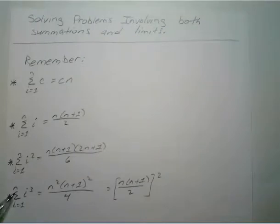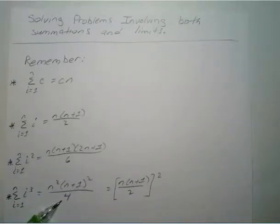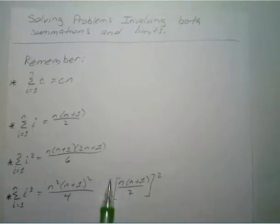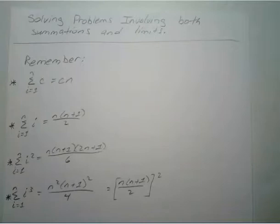And if you have the sum from i equals 1 to n of i to the third power, that's going to equal n squared times n plus 1 squared over 4, or you can rewrite that as n times n plus 1 over 2, that entire quantity squared. If you are still writing this down, feel free to press pause, but we're going to go ahead and jump to our first example.